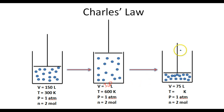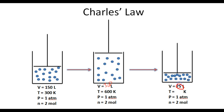Furthermore, what if the volume decreases to 75 liters? The volume is decreasing, people, because according to Charles' Law, the temperature is going to decrease as well. You'll notice that the volume here has decreased by a factor of one-fourth — it's gone from 300 to 75. This number is exactly one-fourth of 300. So what will the temperature end up being? It will be one-fourth of 600, which is 150 Kelvin.